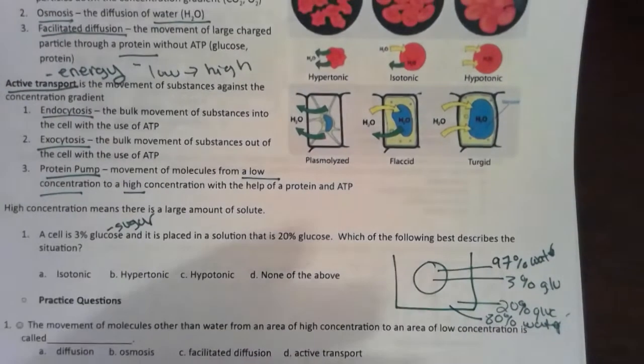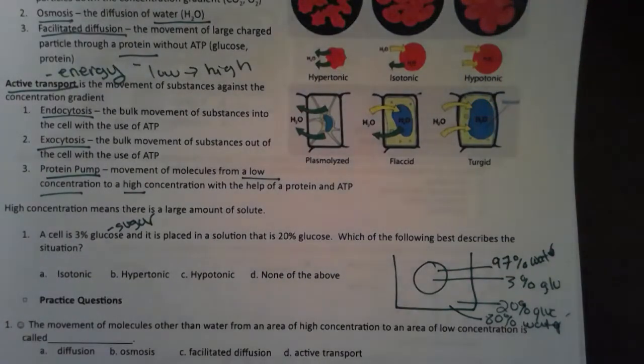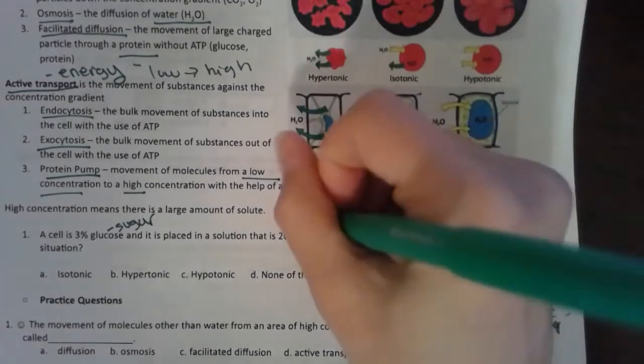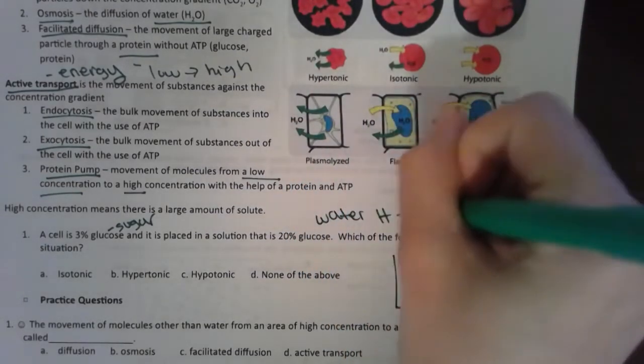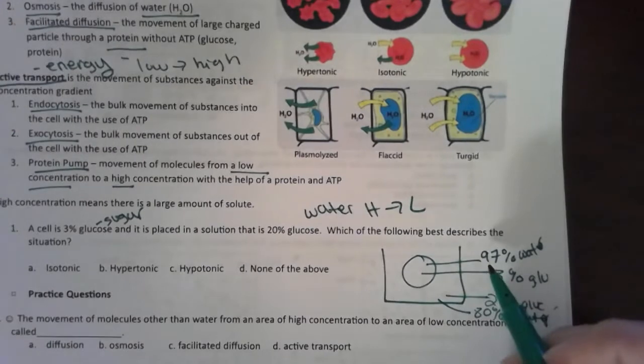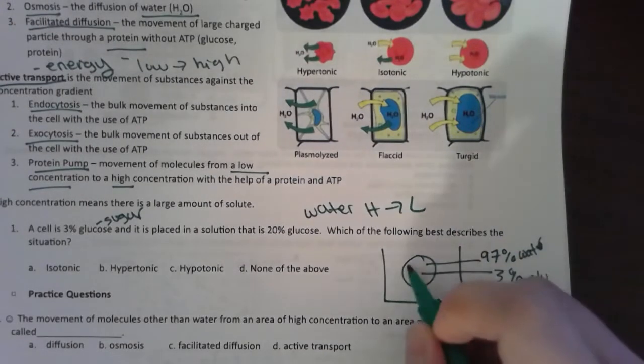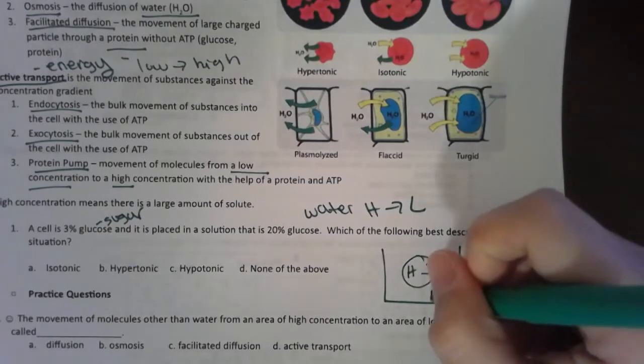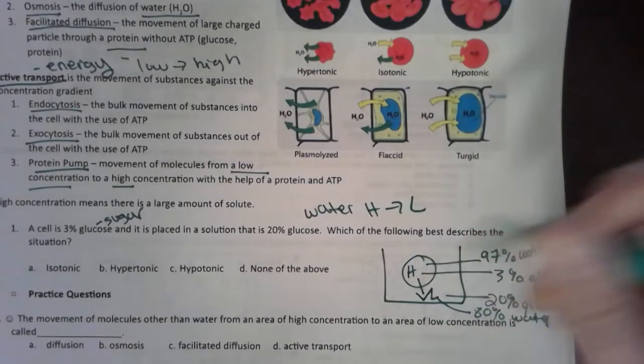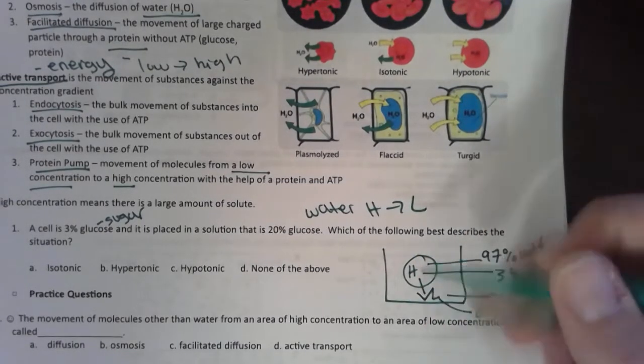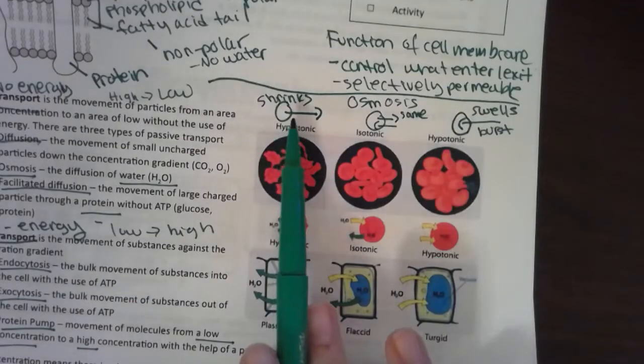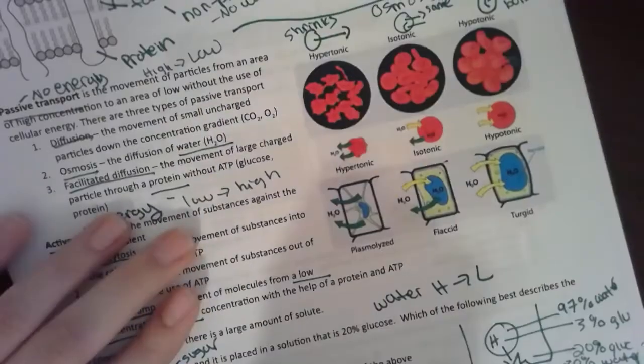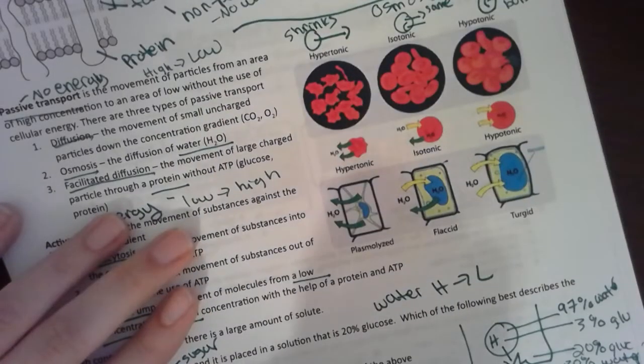I know that water always moves from high to low. What's my higher number of water? That's 97%, that's inside the cell. My lower number of water is 80%, that's outside. That means that my water is leaving the cell. When I looked up the one where water was leaving the cell, that was hypertonic. That means that my cell is going to shrink. My answer is going to be B.